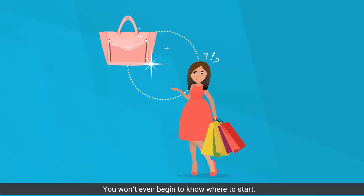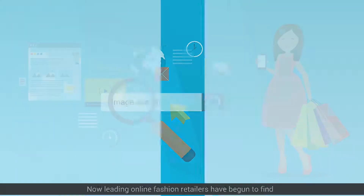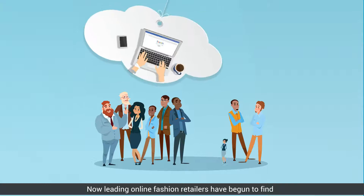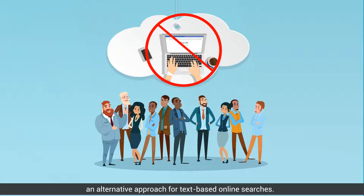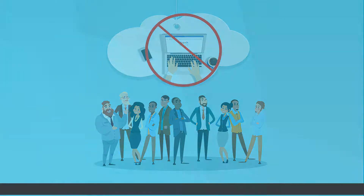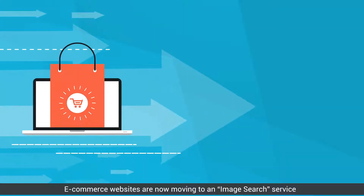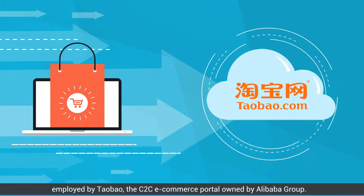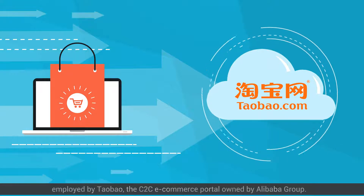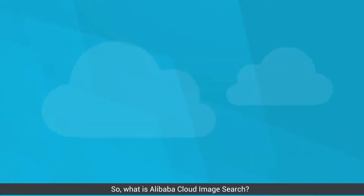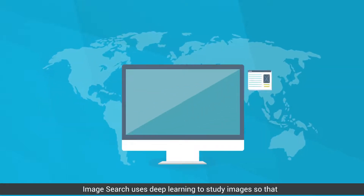However, such challenges are a thing of the past. Leading online fashion retailers have begun to find an alternative approach for text-based online searches. E-commerce websites are now moving to an image search service employed by Taobao, the C2C e-commerce portal owned by Alibaba Group. So what is Alibaba Cloud Image Search?